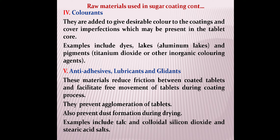Colorants are added to the sugar coating to give a desirable color and cover imperfections present at the tablet core. Examples include dyes, lakes, pigments, titanium dioxide, and other inorganic coloring agents. Anti-adhesives, lubricants, and glidants reduce friction between coated tablets and facilitate free movement during the coating process. They also prevent agglomeration and dust formation during drying. Examples include talc, colloidal silicon dioxide, stearic acid, and its salts.